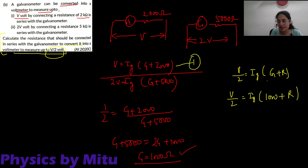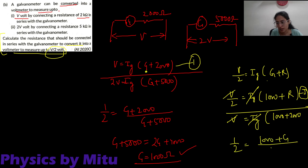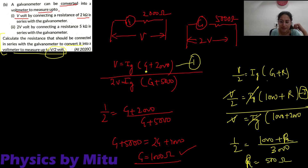We have two variables, so we need to eliminate one — take the ratio of the equations. V is equal to IG into (1000 + 2000), that is 3000. Taking the ratio: 1/2 is equal to (1000 + R) upon 3000. Solving: 1000 + R equals 1500, so R is equal to 500 ohm.